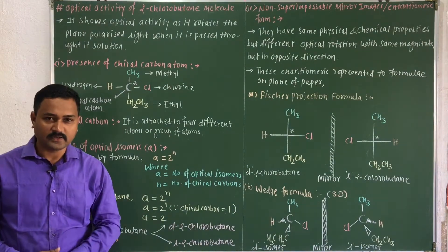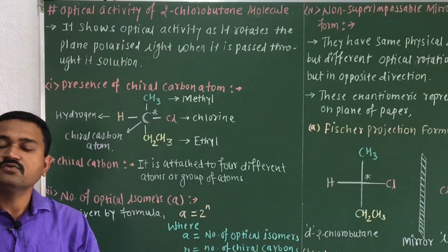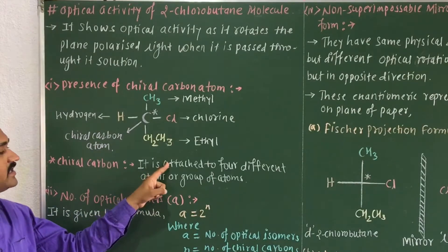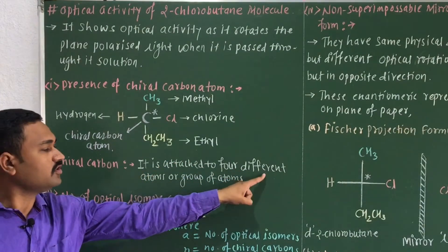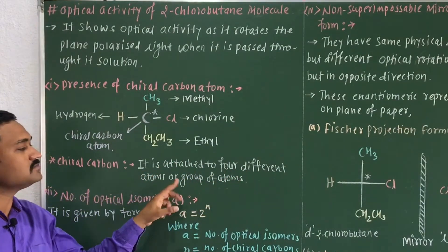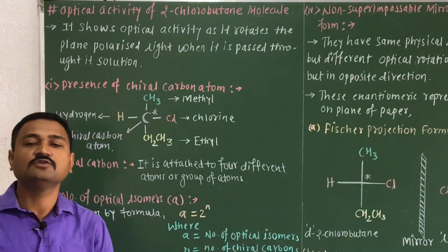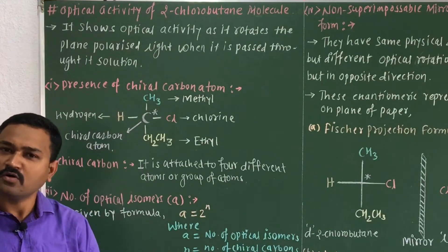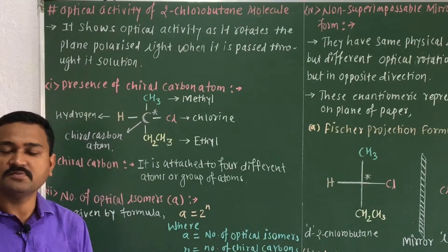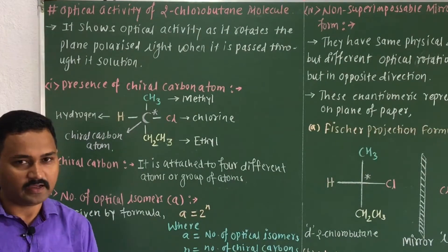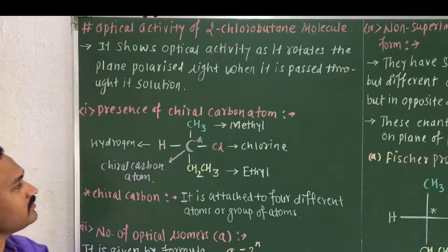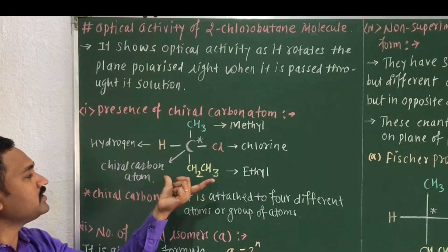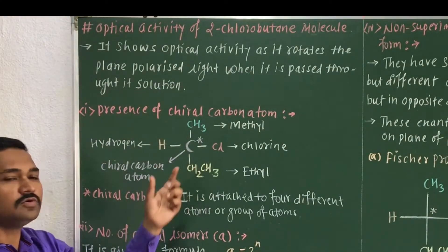A chiral carbon atom is a carbon atom which is attached to four different atoms or groups of atoms. It is also known as an asymmetric carbon atom. I have represented the structure of 2-chlorobutane here.